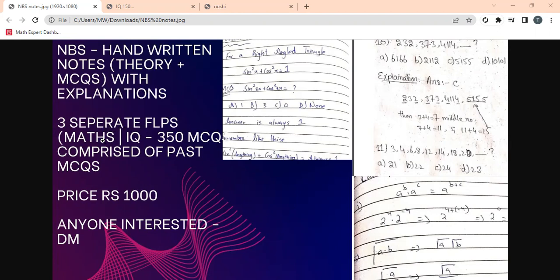And with this, there are three separate FLPs - Maths, IQ - they comprise over 350 MCQs which has been created by NBS.